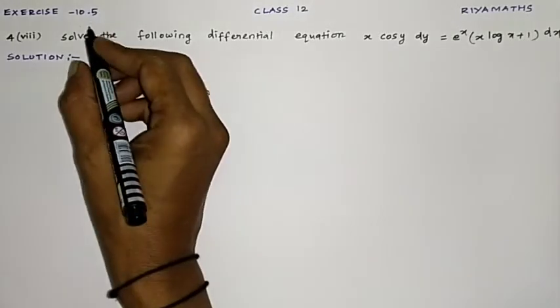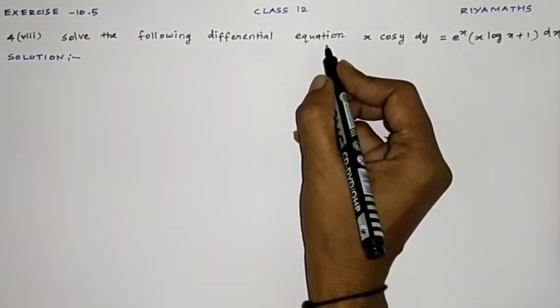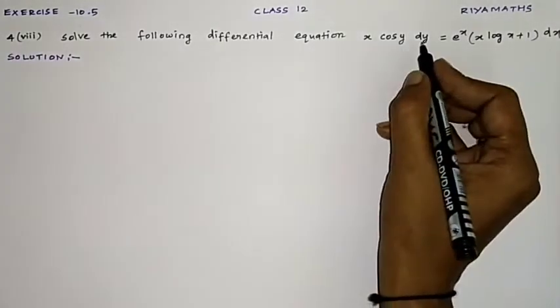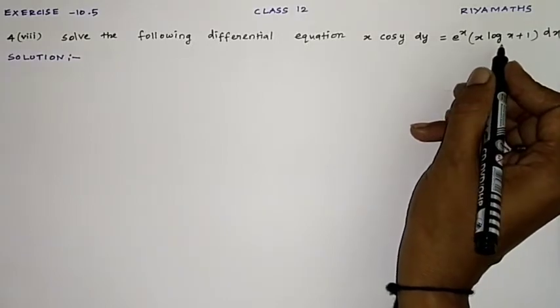Hi students, welcome back. Exercise 10.5, question number 4, 8th subquestion. Solve the following differential equation: x cos y dy = e^x (x log x + 1) dx.